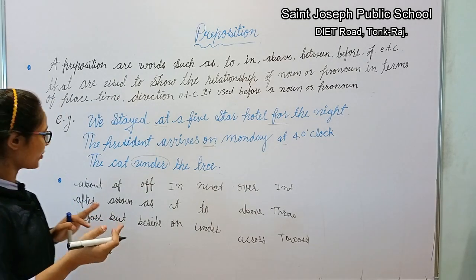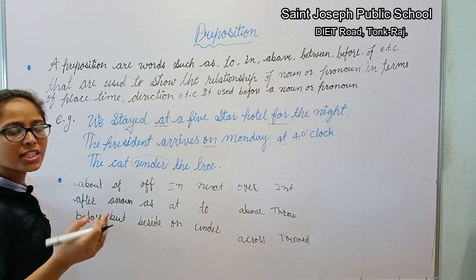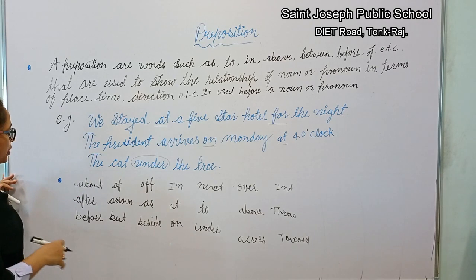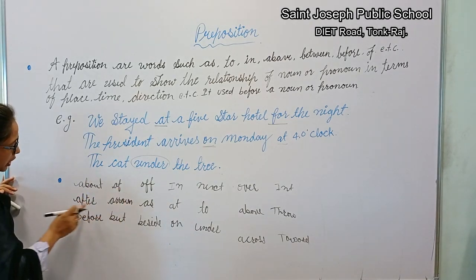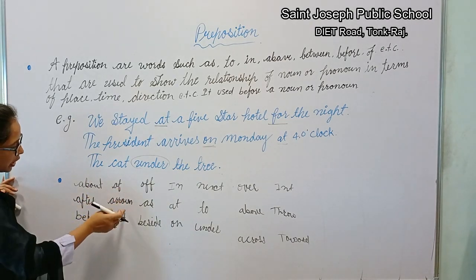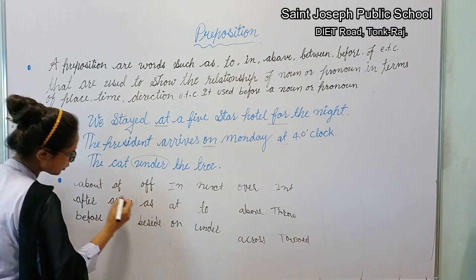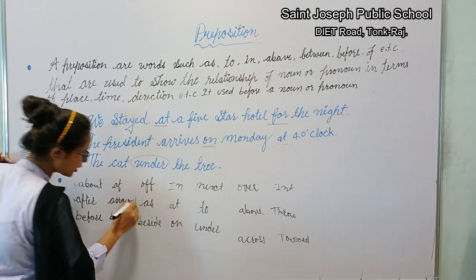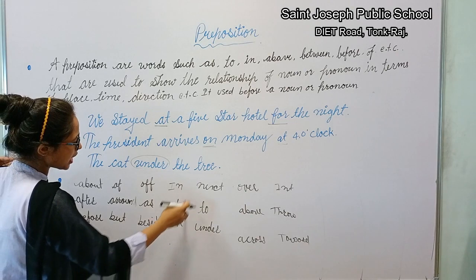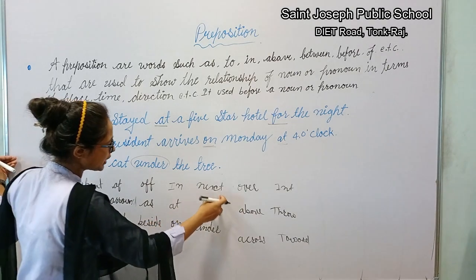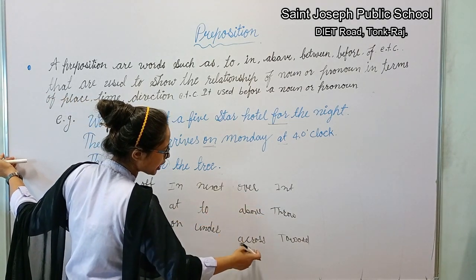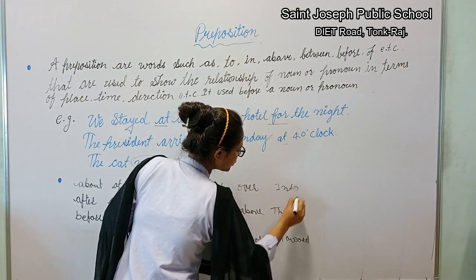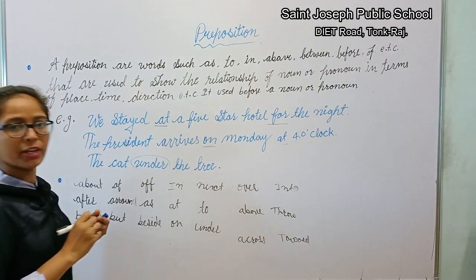Now let's look at preposition words. Some common preposition words are: about, or, after, before, around, as, beside, in, on, next to, under, over, above, across, into, through, and over. These are the common preposition words we use.